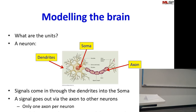Adult neurons don't undergo cell division. You don't get smarter as you grow older because you get more neurons — you get smarter as you grow older because your neurons die. And that should scare you.